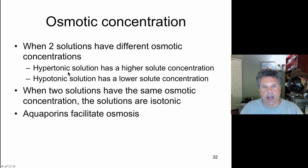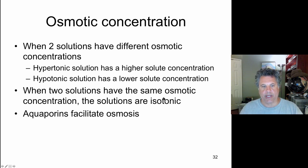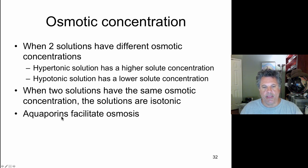So we have hypertonic — higher dissolved molecules, higher solute concentration. Hypotonic — lower solute concentration relative to another solution. And if two solutions have equal solute concentrations, we say they are isotonic. Water in cells flows across membranes mainly through special proteins called aquaporins that allow water to pass through the membrane.